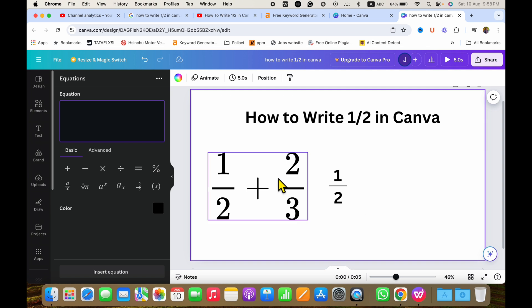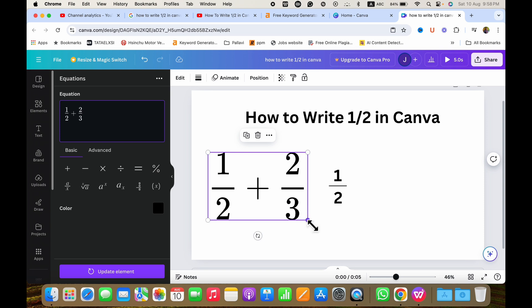Now you can also click on the text box and then you can drag the text box like this to change the size of the fraction that you have written on your Canva sheet.